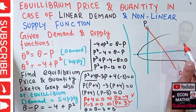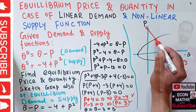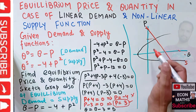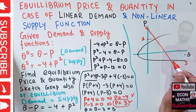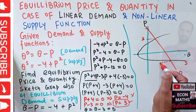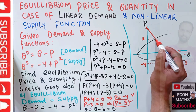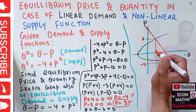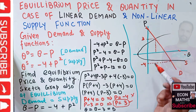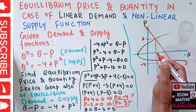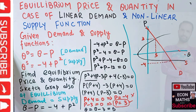The demand and supply functions intersect at two points: one where price is 3 (positive) and one where price is -4 (negative). Since price cannot be negative, only the point at P = 3 is our feasible equilibrium point, with the corresponding equilibrium quantity of 5.